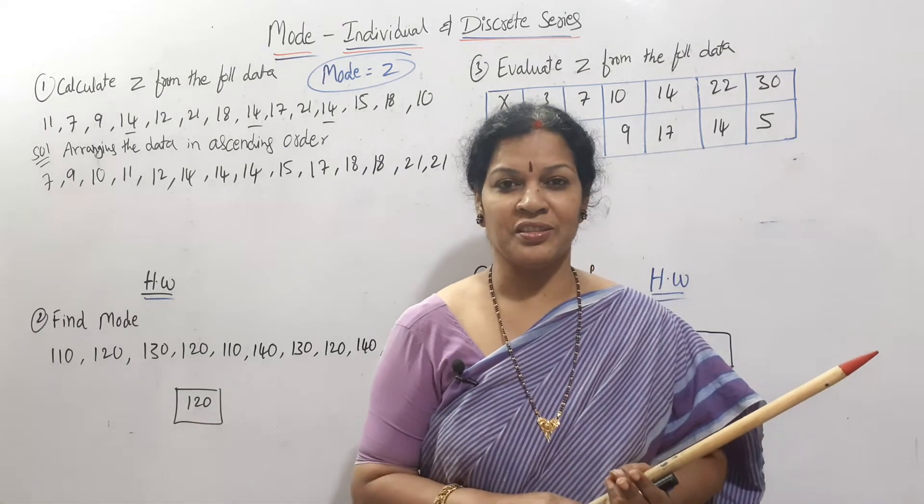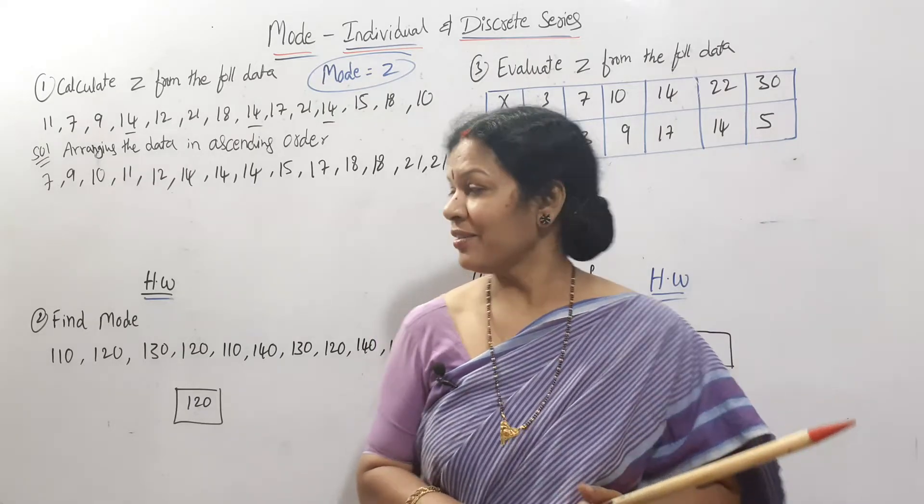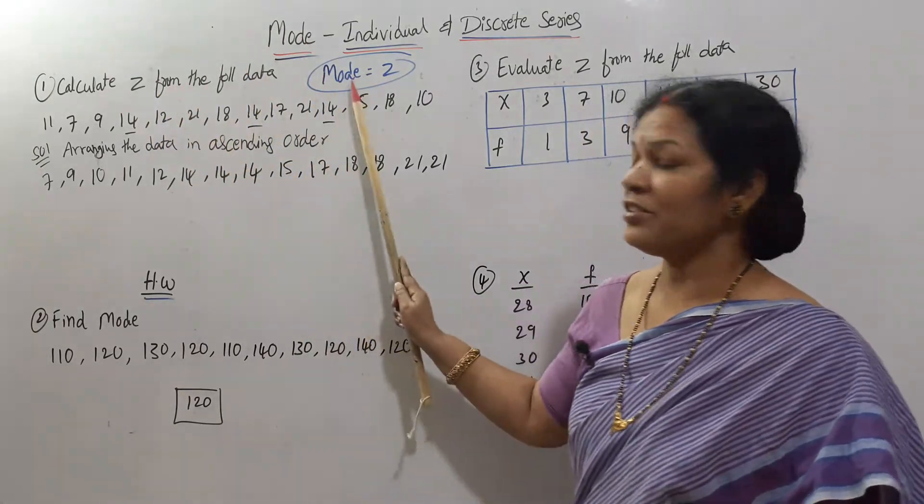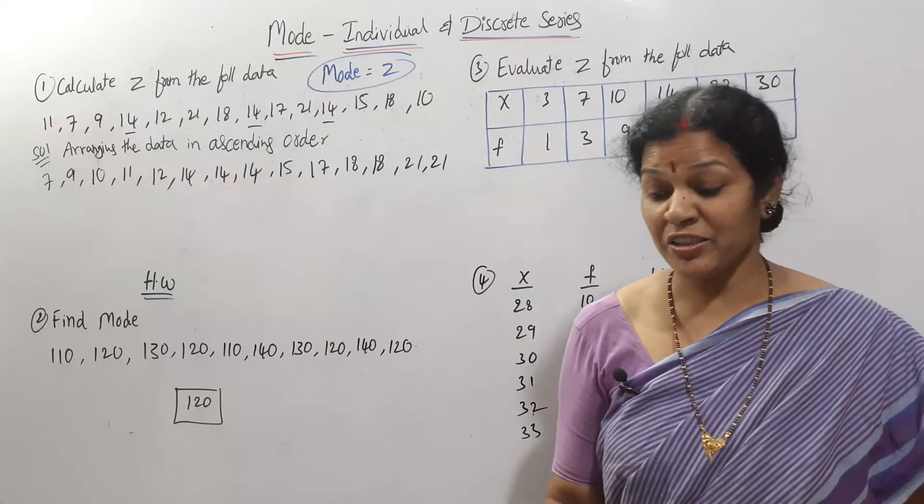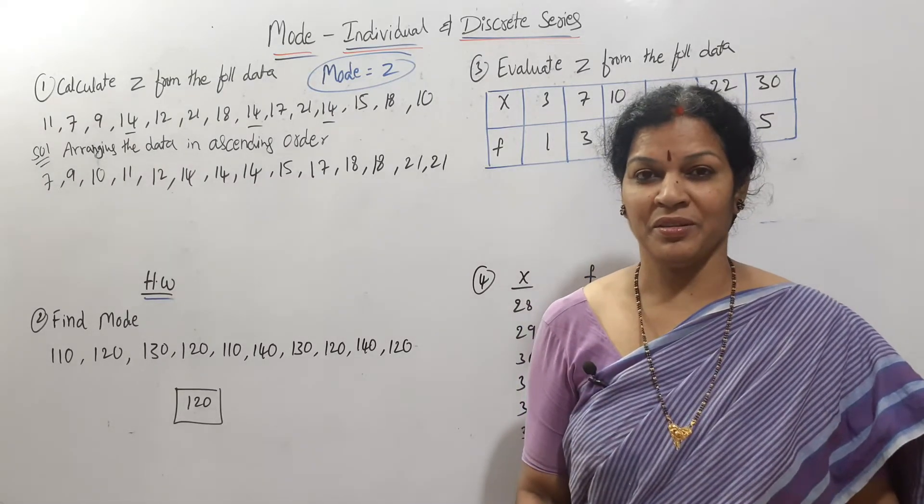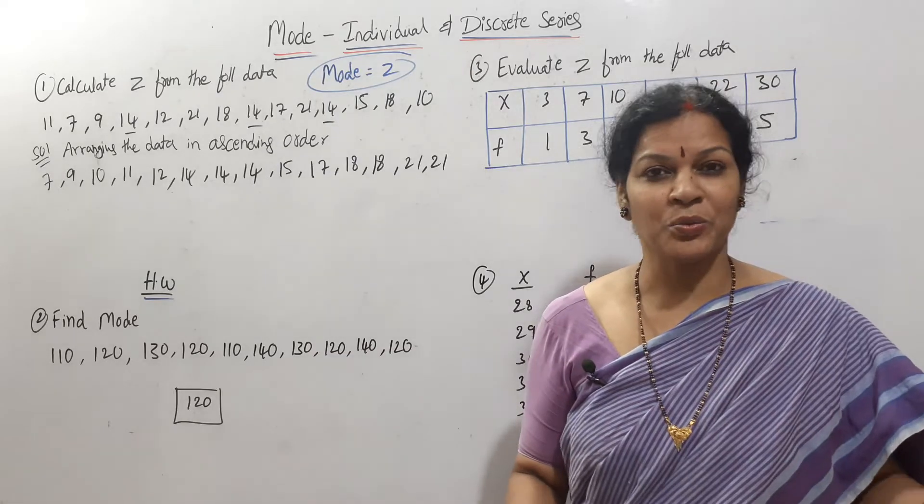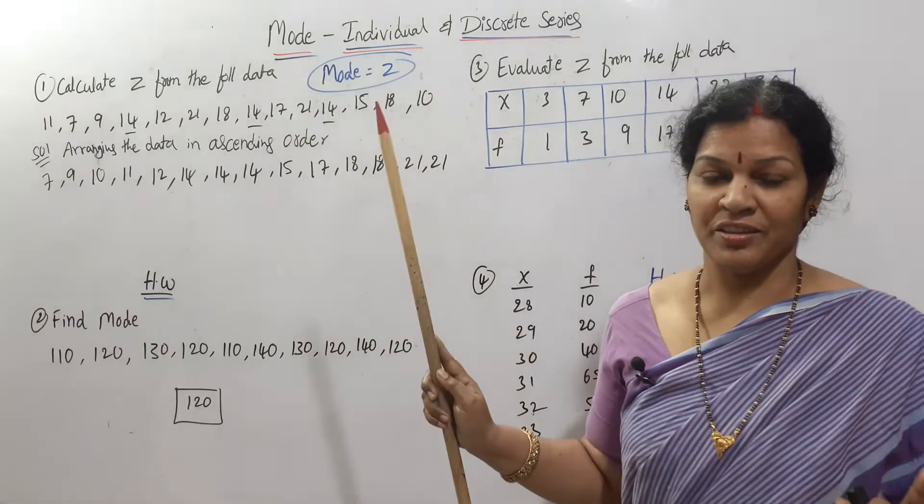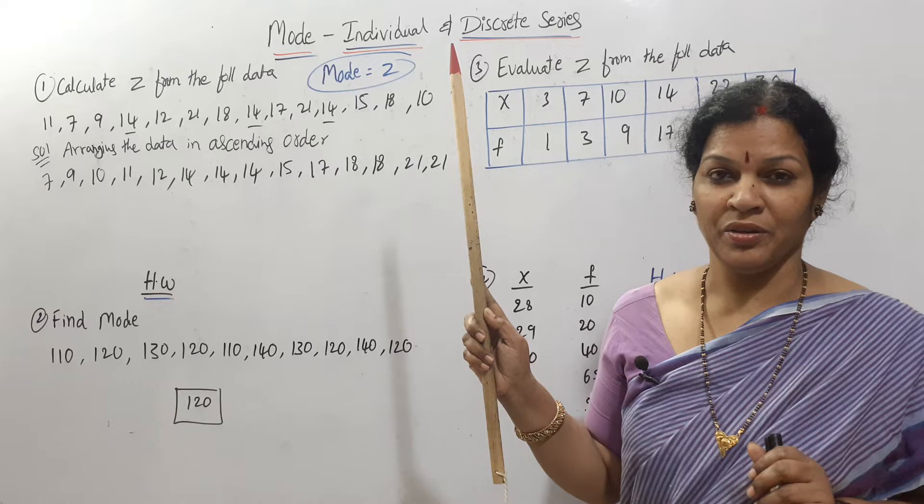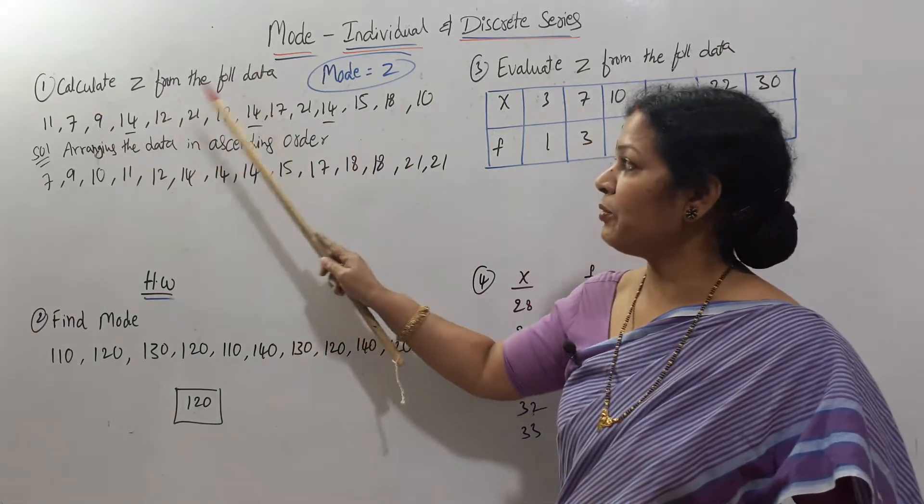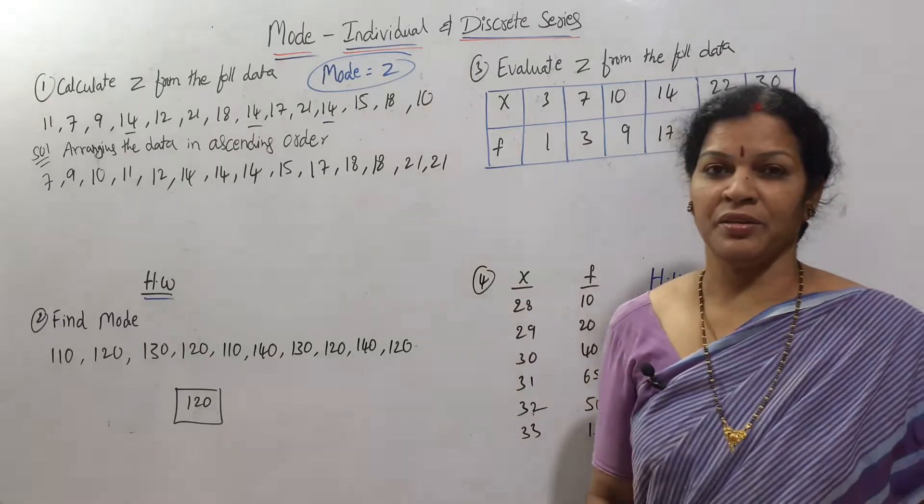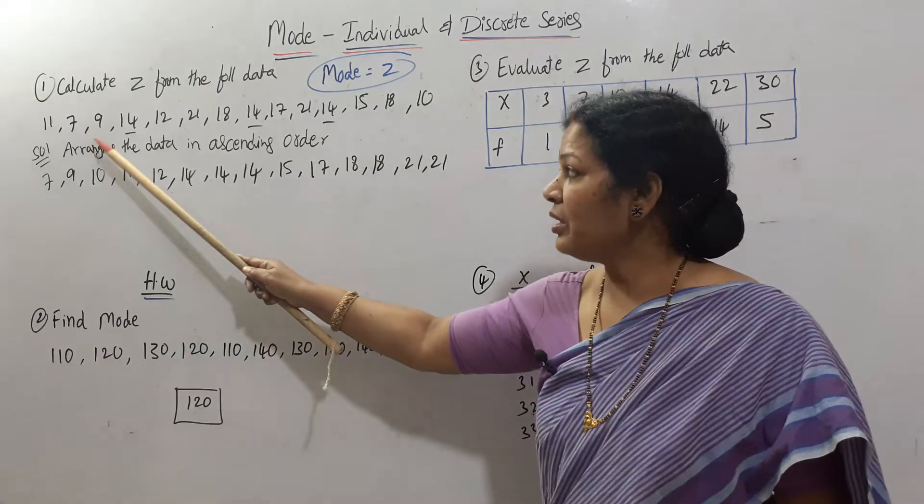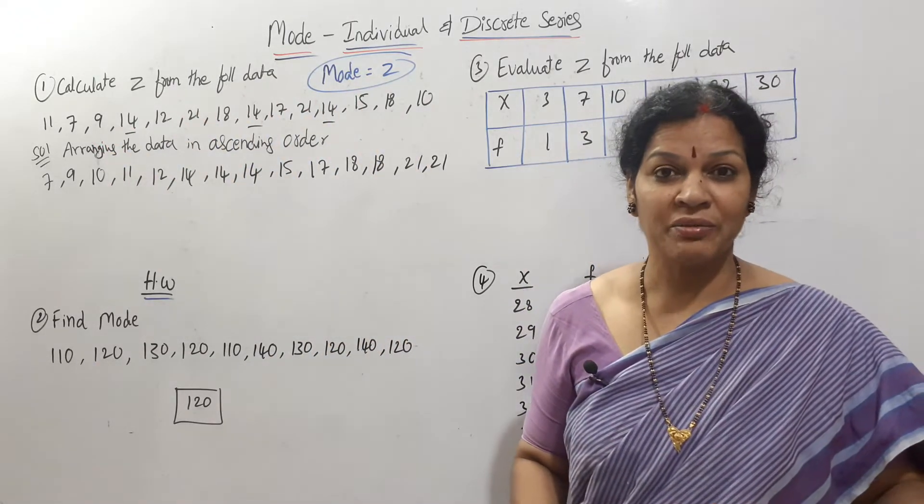Now here is a problem: calculate z from the following data. Z means mode. You know that x̄ means arithmetic mean, M means median, Q1 is quartile 1, Q3 is quartile 3 - in the same way, z is mode. How to identify whether this is individual series or discrete series? In individual series, only one data column is given; there is no frequency column. Since frequency is not given, this is individual series.